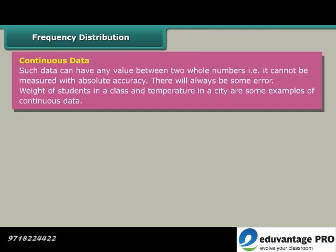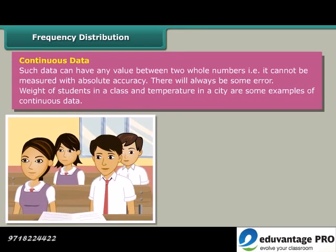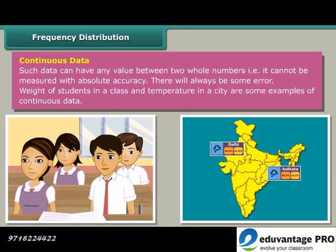Continuous data: Such data can have any value between two whole numbers. That is, it cannot be measured with absolute accuracy. There will always be some error. Weight of students in a class and temperature in a city are some examples of continuous data.